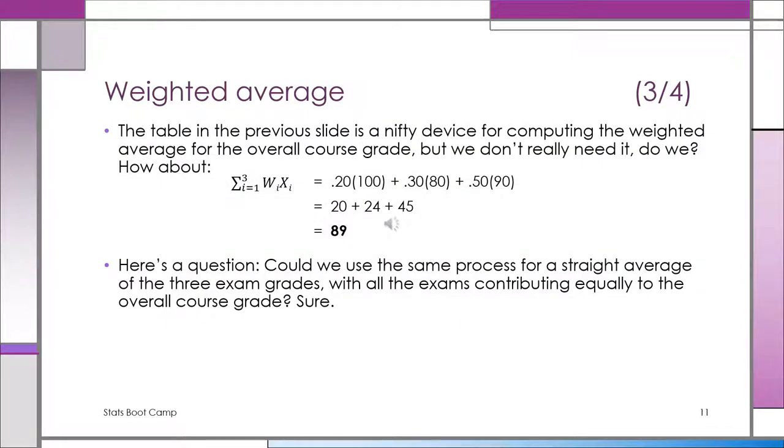The table was nice and made things kind of simple, but it's not very compact. Using summation notation for the weighted average is actually easier to do. You take a look, you have the weights, you have the grades. Turns out to be 89, exactly the same as what we had before. Here's a question: What formula would we use if we had all the same weights for the grades, if we were weighing them all the same in order to come up with a course average?